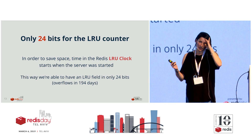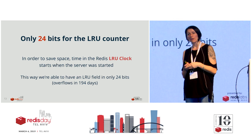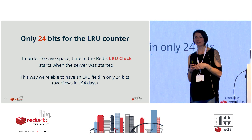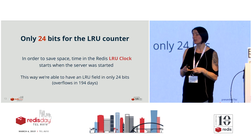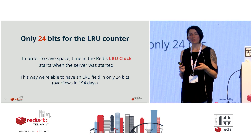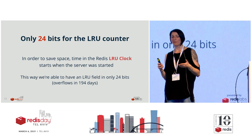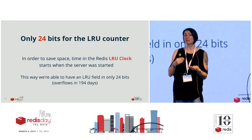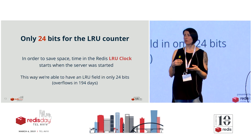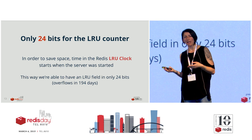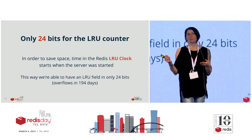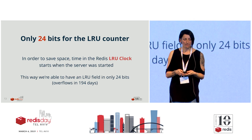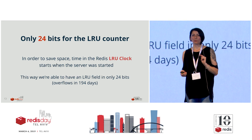So, in order to save space, the LRU clock of Redis starts counting time when the server was started. That's how, in only 24 bits, we are able to have a reasonable idea of when the key was last used. It overflows only after 194 days, and in that time, if everything works well, that key should already be expired anyway. So that's our first problem solved.